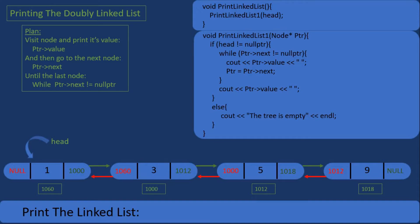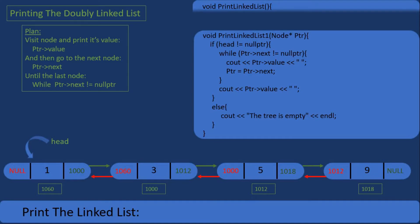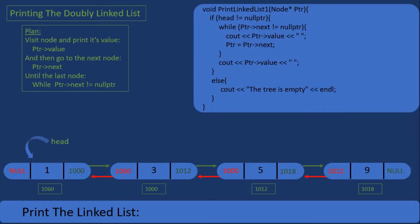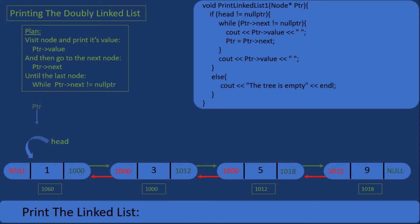In line 2, if the pointer ptr is not null, or if we have nodes in our doubly linked list, we proceed to line 3 — a while loop which checks if the next pointer of the node ptr is pointing to is not null. In our example, the node with the value of 1 is pointing to another node, so we enter the while loop and we print the value 1, then we advance the pointer ptr to point to the next node.